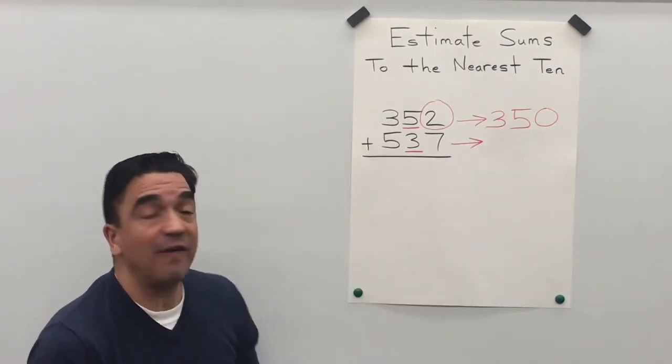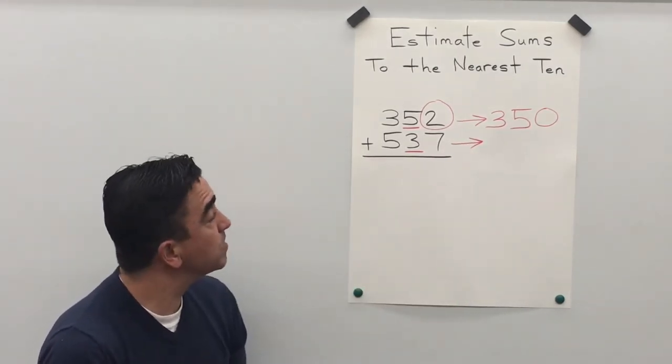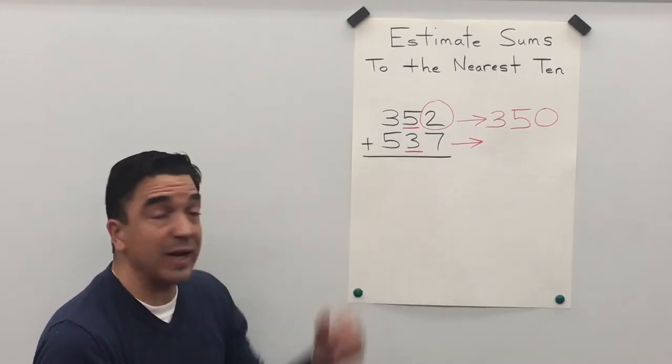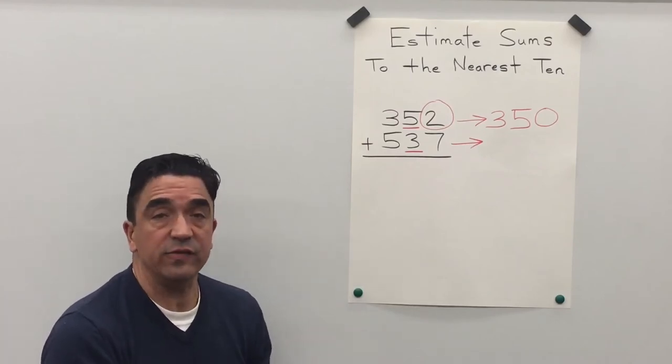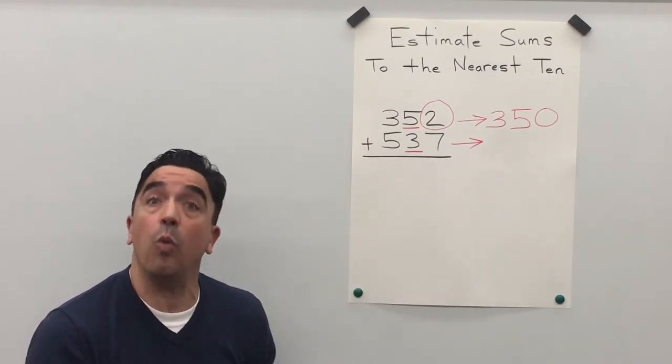Now let's look at 537. Well the three is in the tens place and the seven in the ones place is going to tell the three what to do.